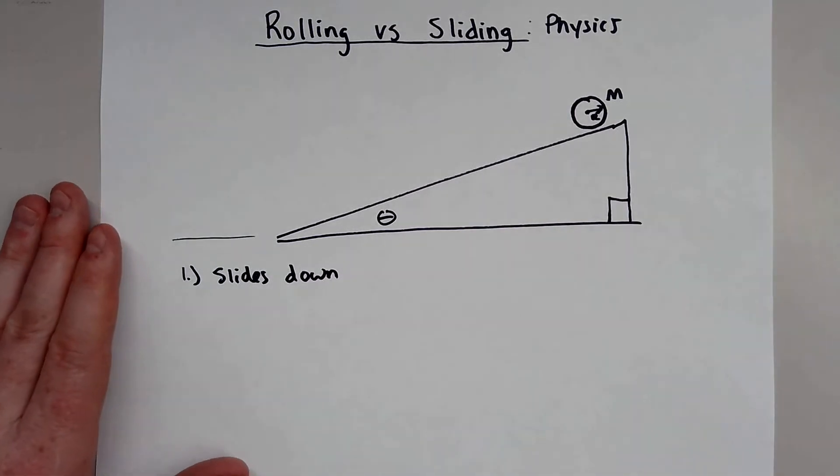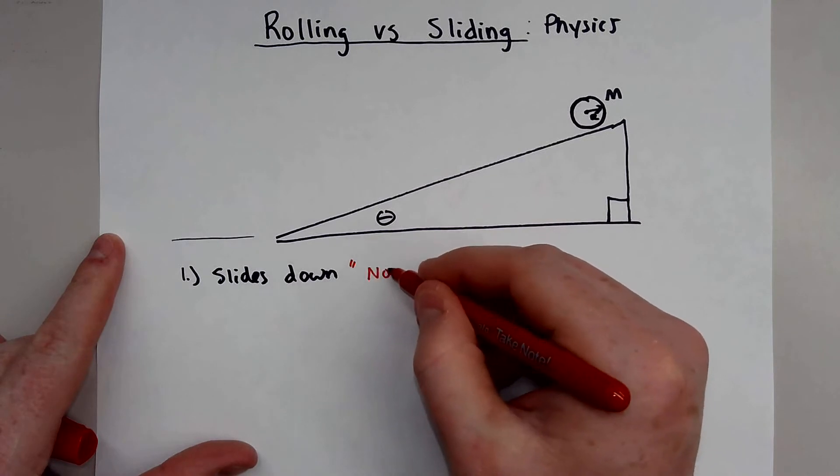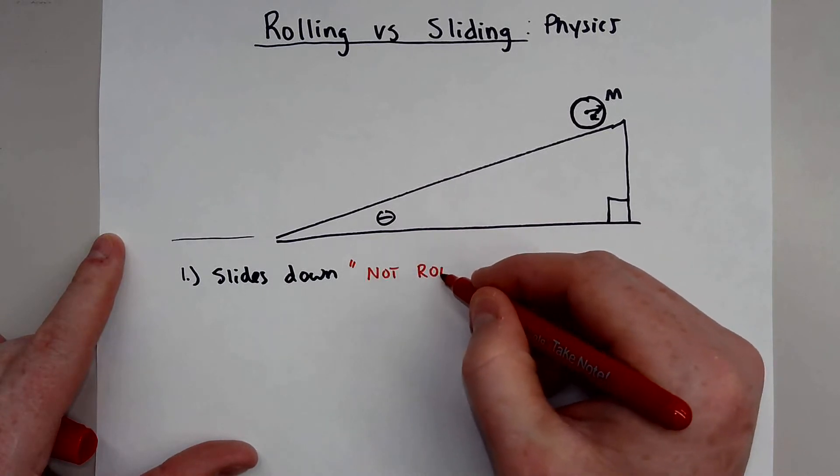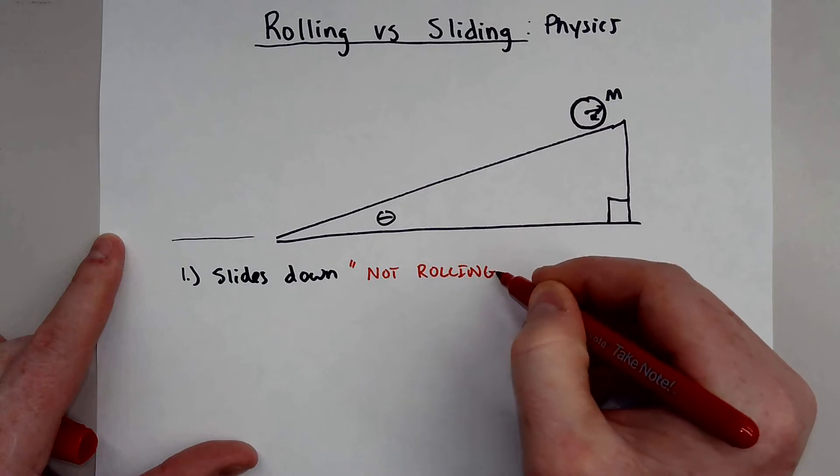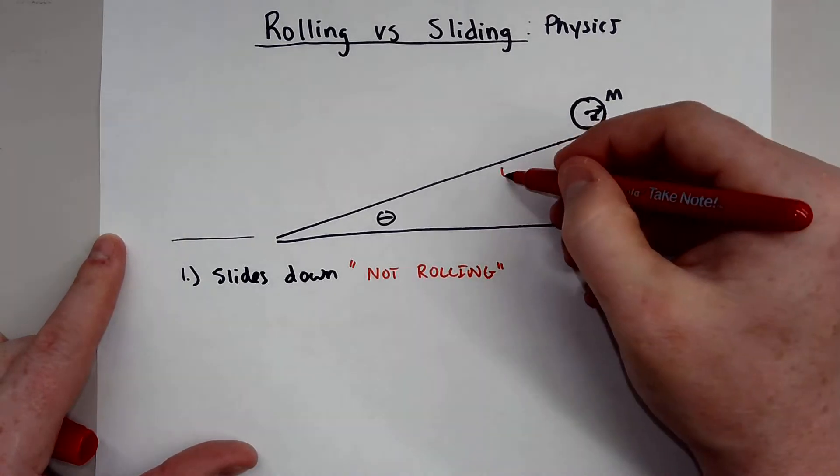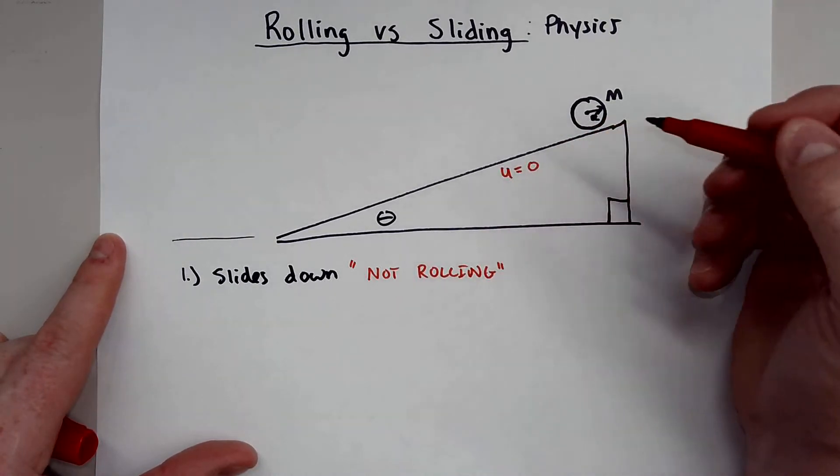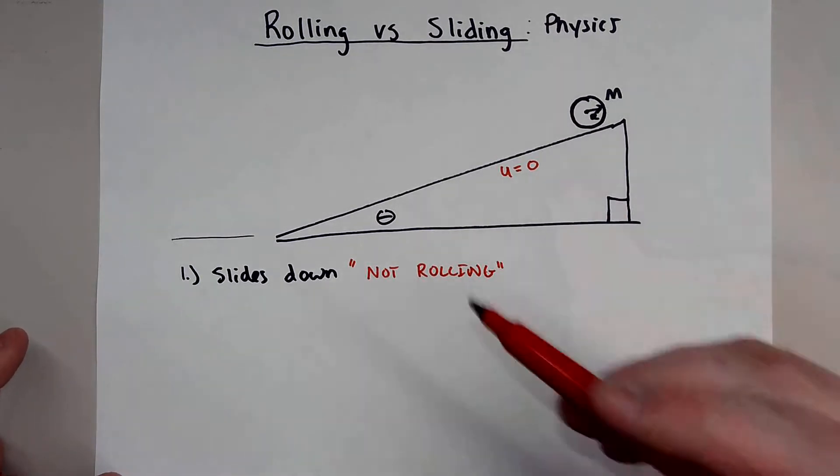Now, sliding is very important because what sliding means is the object is not rolling. Now, this can pretty much only happen if your situation is frictionless. So there is no friction.